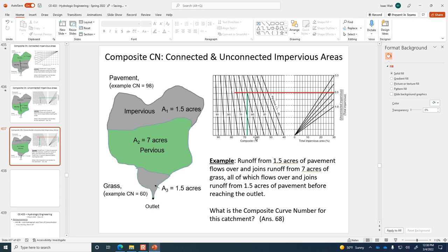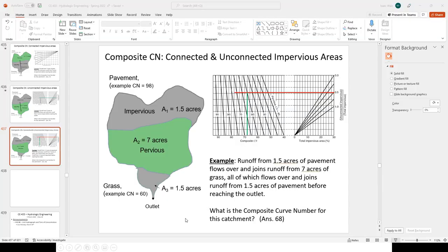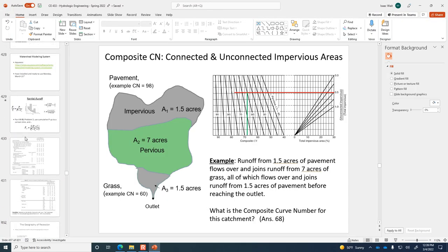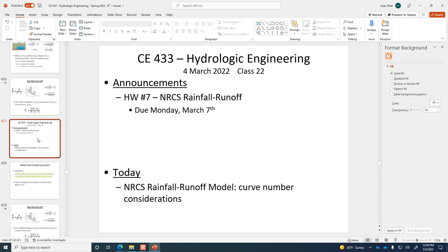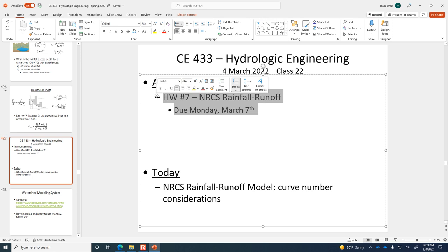It follows that line down to the composite curve number area and gives a weighted average of 68 when it's half-and-half unconnected impervious versus connected pervious. Those are the key factors for adjusting how curve number behaves — curve number can be adjusted based on watershed characteristics or precipitation distribution. Your next homework assignment is due Monday, so you've got the weekend to work on it. Have a nice weekend, and I'll see you on Monday.